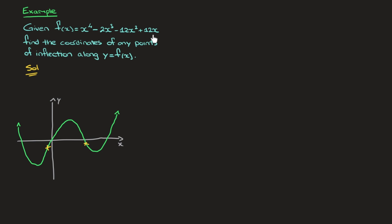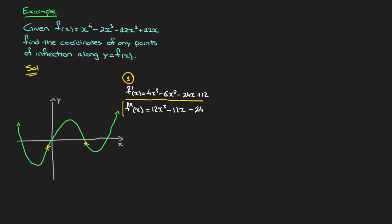Here are three steps we can always use to find any curve's points of inflection. Step one is to find this function's second derivative, and for that I need to differentiate this function twice. So f prime of x equals 4x cubed minus 6x squared minus 24x plus 12. Then differentiating again, f double prime of x equals 12x squared minus 12x minus 24. And that's the first step done.